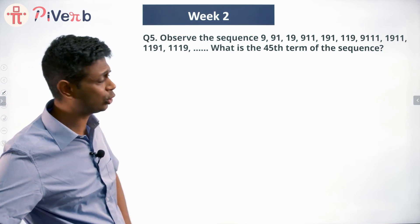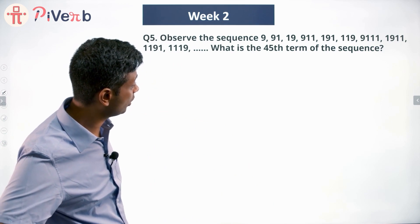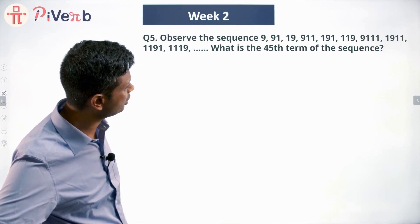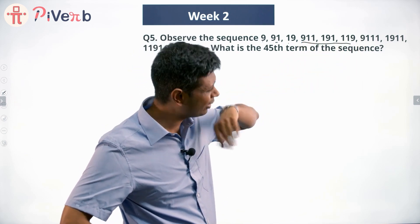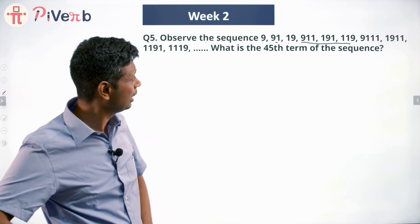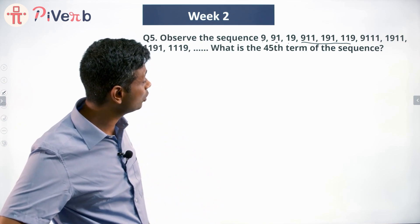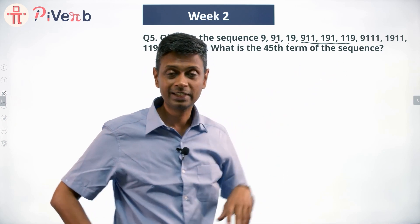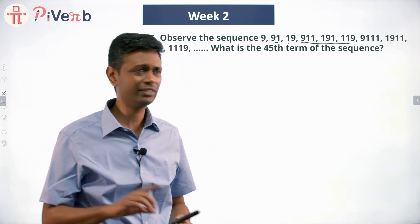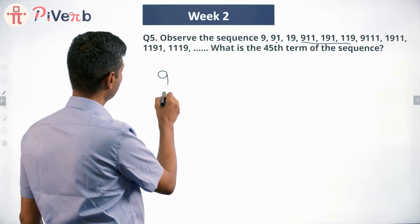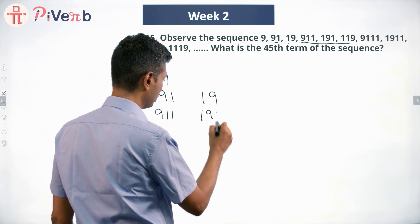There is some pattern observing to do, and it took me a while to even understand what the pattern was. The first number is 9, then 91, 19 — so that's one-digit and two-digit numbers. Then three-digit numbers, four-digit numbers, and so on. All of these numbers have only 9 and 1 in them. I'm going to write it down slightly differently: first number is 9, second is 91, third is 19.